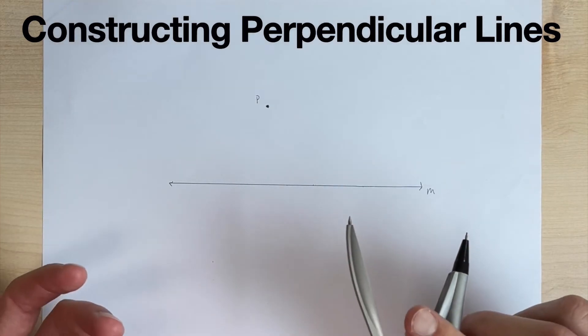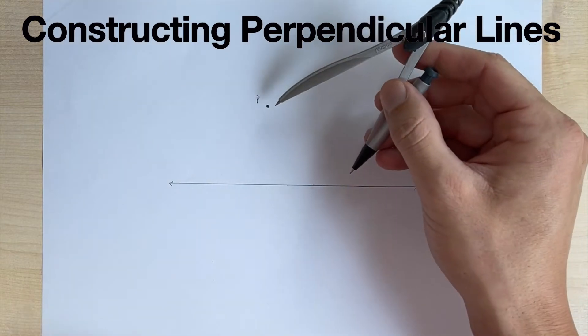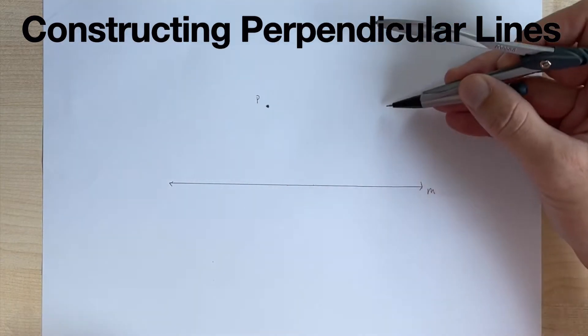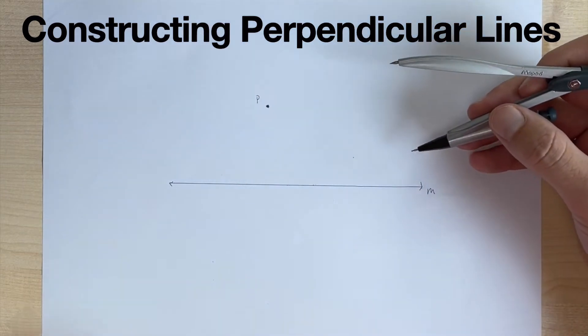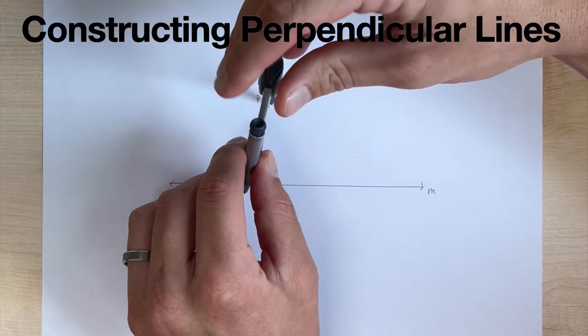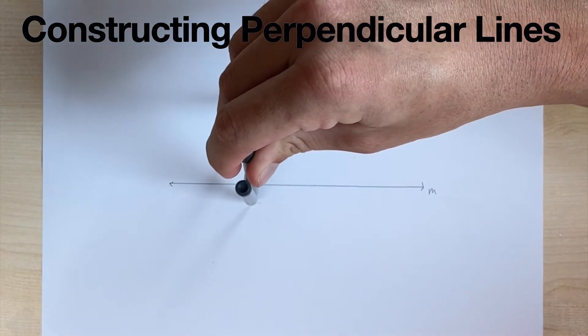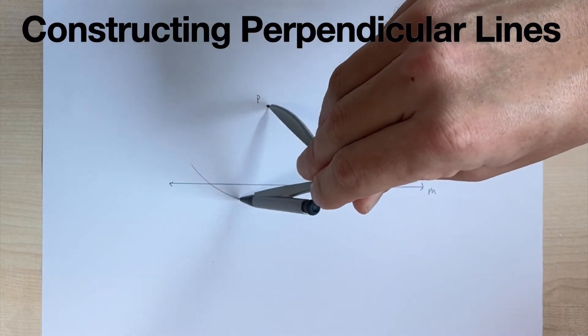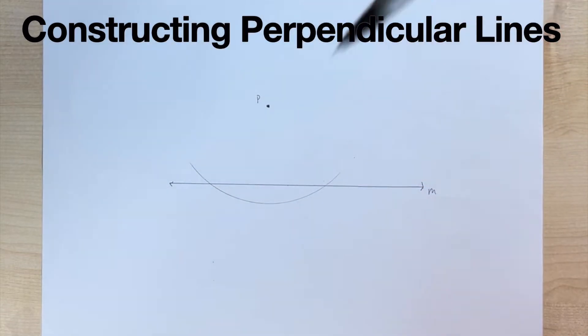All right. So what we're going to do to start off is put the needle of our compass on point P, and we're just going to make an arc on line M that intersects line M twice. So we'll put the needle at P and draw an arc and just make sure this arc intersects two places on our line.